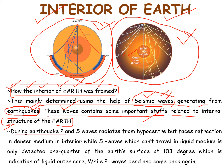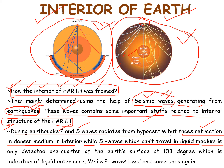During the earthquake, P and S waves radiate from the hypocenter. The earthquake gives two types of waves — P and S waves — that radiate from the hypocenter but face refraction. As we know there is a difference in the composition of the interior of the Earth from the crust to core, which gives us this kind of differentiation in the P and S waves' directions. The waves face lots of refraction through the interior of the Earth in the denser medium. The S wave, which cannot travel in a liquid medium, is only detected on one quarter of the surface at 103 degrees.